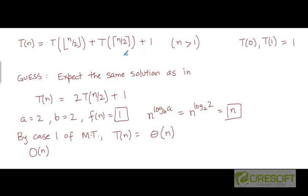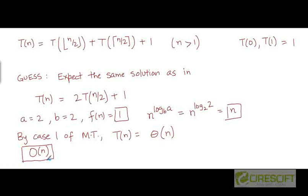Let's try to prove that using the substitution method. We will divide the claim into two parts: first we will claim and prove that T(n) is in O(n), and then we will prove that T(n) is in Ω(n). Having proven both, we will have proven that T(n) is in Θ(n). Let's first focus on proving T(n) is O(n).